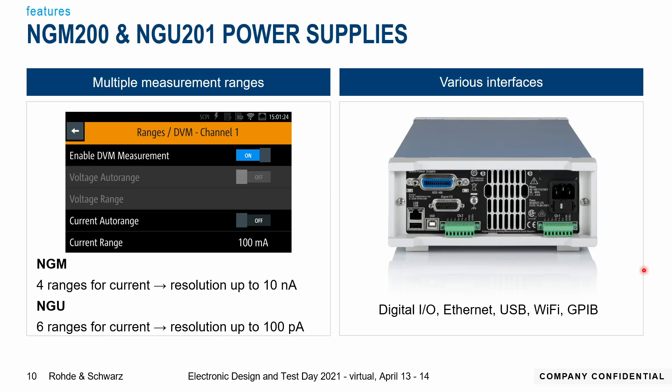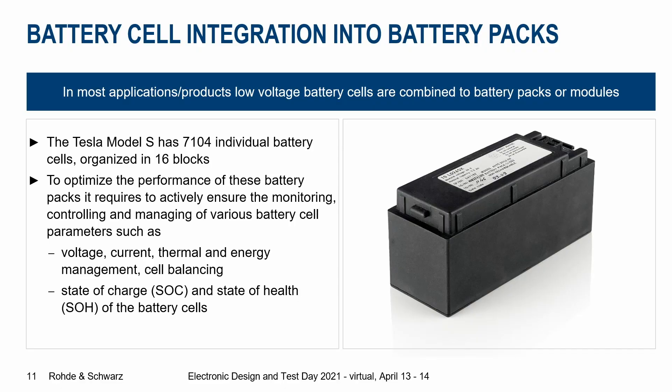Now we have an instrument that is perfect to simulate battery cells. But in reality, we usually don't use individual battery cells — in the real world, they are combined into battery packs and modules. For example, the Tesla Model S has 7,104 individual battery cells organized in 16 battery packs. We need to make sure these individual cells work together as a system, which requires actively monitoring, controlling, and managing various battery cell parameters such as voltage, current, thermal and energy management, cell balancing, state of charge, and state of health. These tasks are taken over by a battery management system, also called BMS.